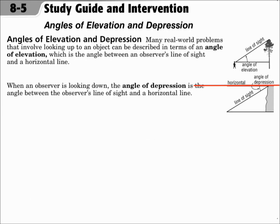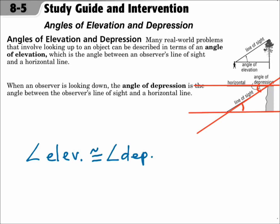Another thing to consider: with the angle of depression, we have two parallel lines cut by a transversal, and alternate interior angles are congruent. So the angle of depression, which starts horizontal and looks down, is congruent to an angle of elevation that starts horizontal and looks up. An angle of elevation is always the same as the angle of depression. Keep that in mind, because sometimes the angle of depression is outside of a triangle, and you need to get an angle that's inside the triangle — you can always make it congruent to the angle of elevation.